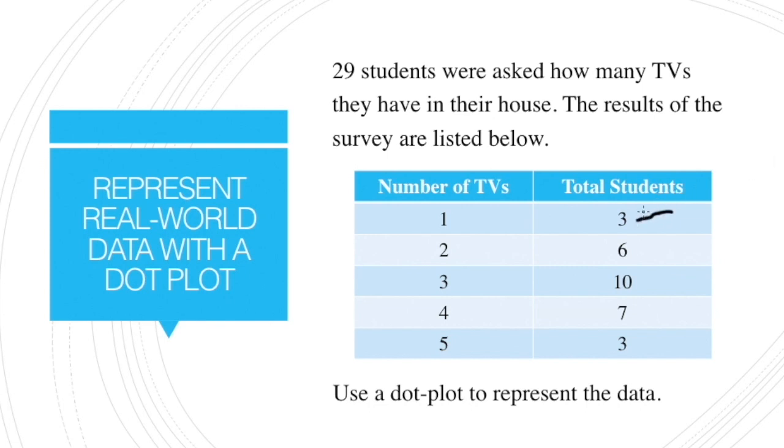Alright, so here we have three students and one TV. We also have six students with two TVs. Ten students answered the survey saying they have three TVs. Seven students said they have four TVs. And three students in my classroom had five TVs.